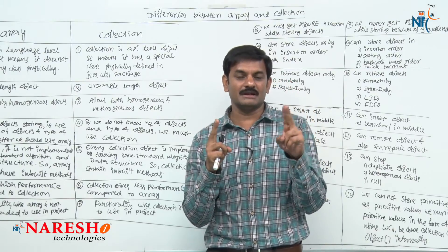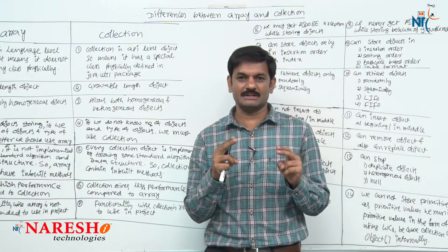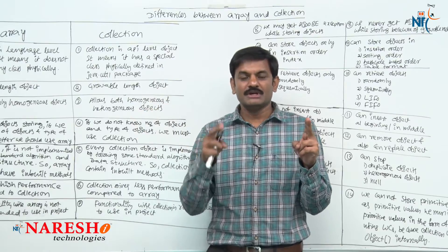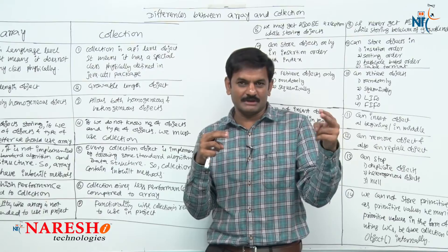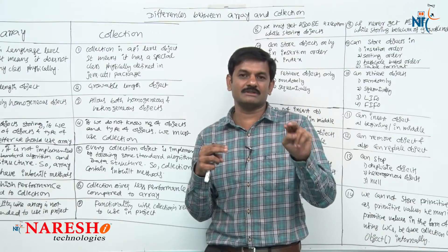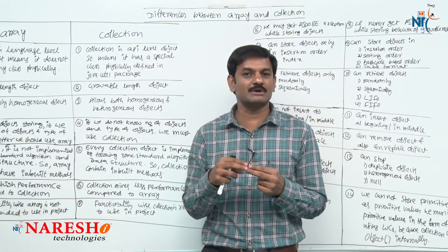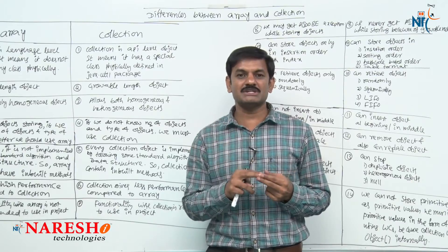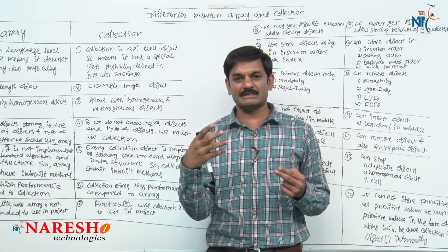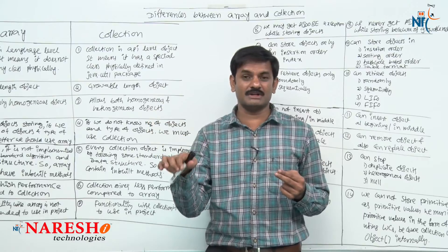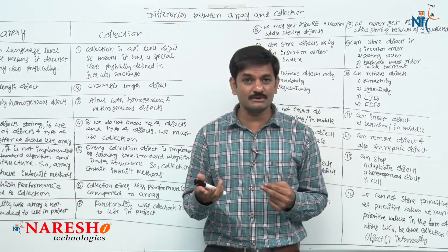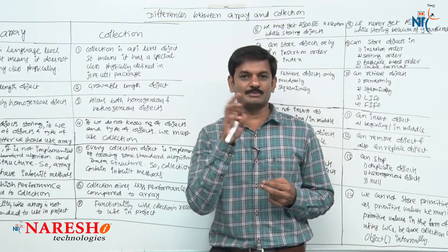Second difference: array is fixed in length — array length is fixed. Whereas collection is a growable-length object. If I create an array with length 10, we can only store 10 objects; trying to store an 11th object may give an ArrayIndexOutOfBoundsException. Whereas with a collection, when you try to store an 11th object, capacity is automatically increased by internally creating a new array object.